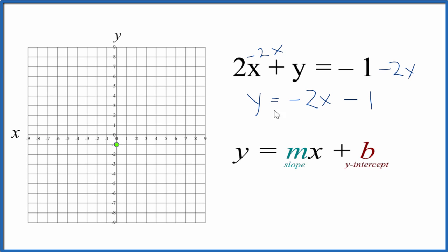Then for the slope, let's call this negative 2x over 1. We're just dividing by 1. We don't change anything, but now we can call it rise over run. So we go to our y-intercept here.